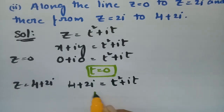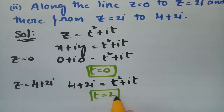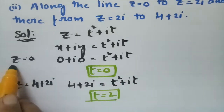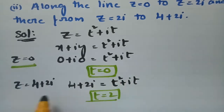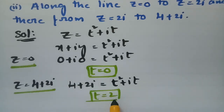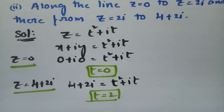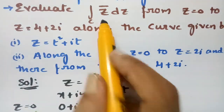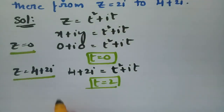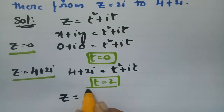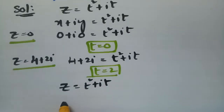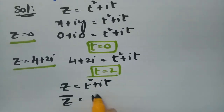So the transformed limits in terms of t are: t=0 when z=0, and t=2 when z=4+2i. Now z̄ is the conjugate of z = t² + it, which gives z̄ = t² - it.